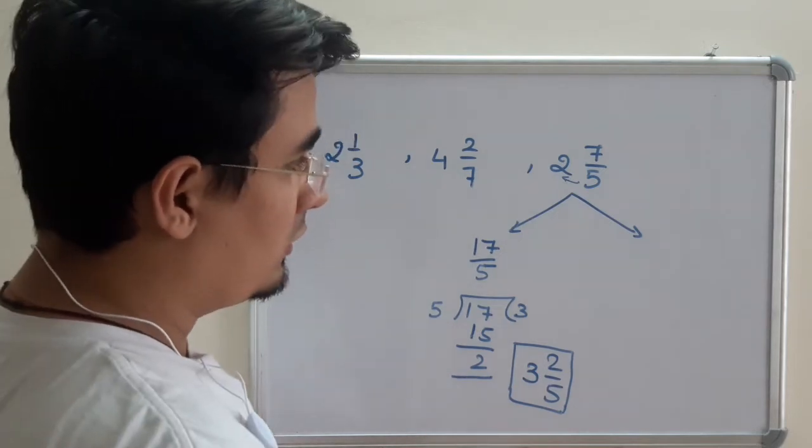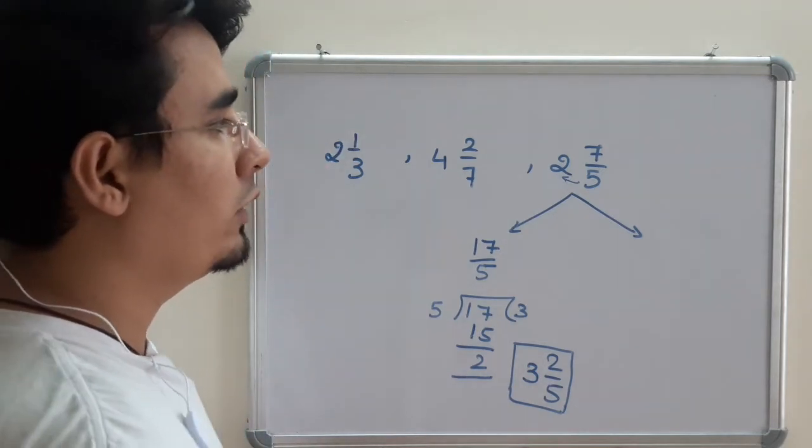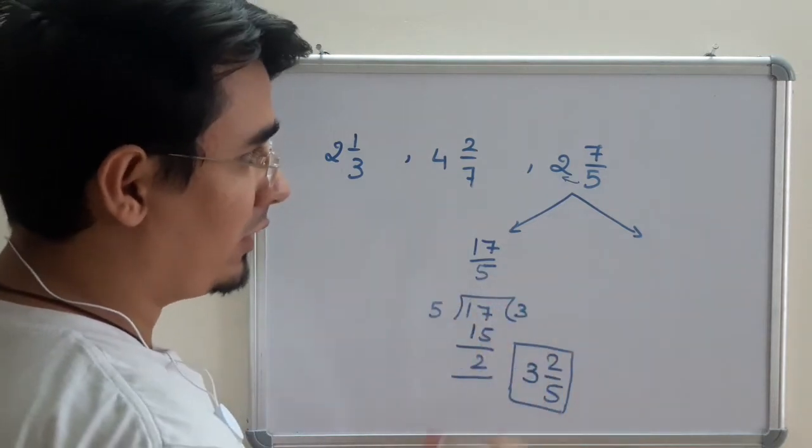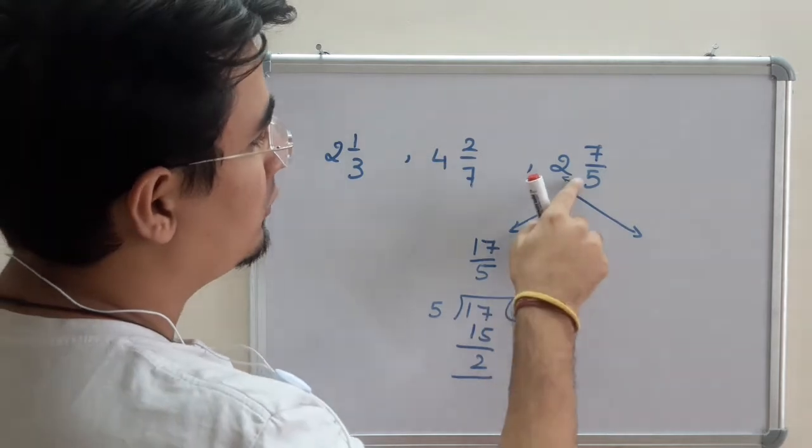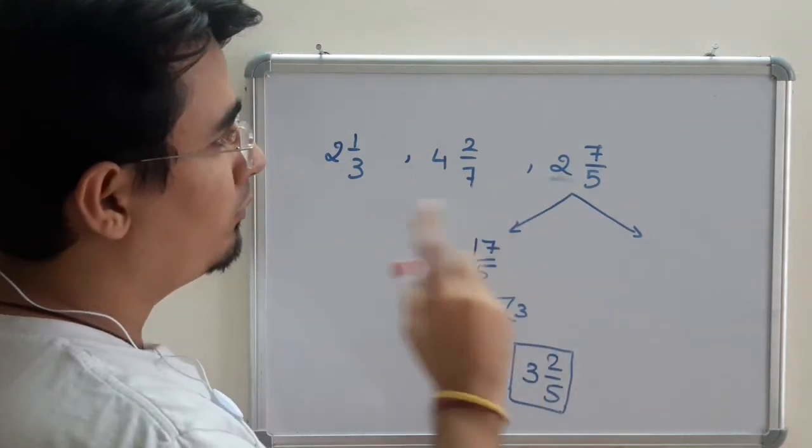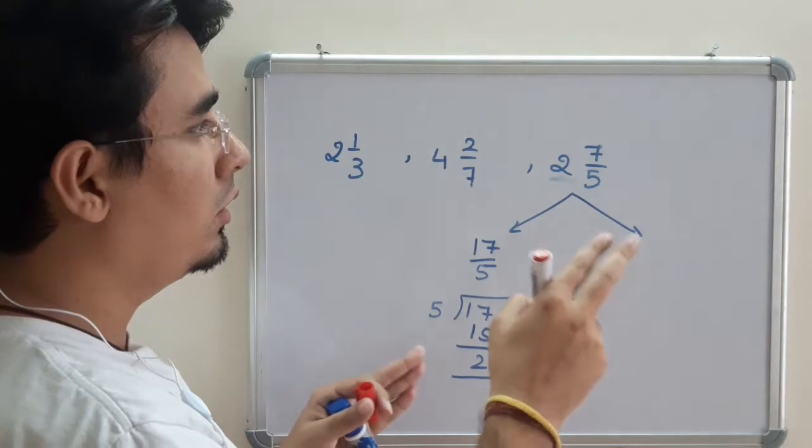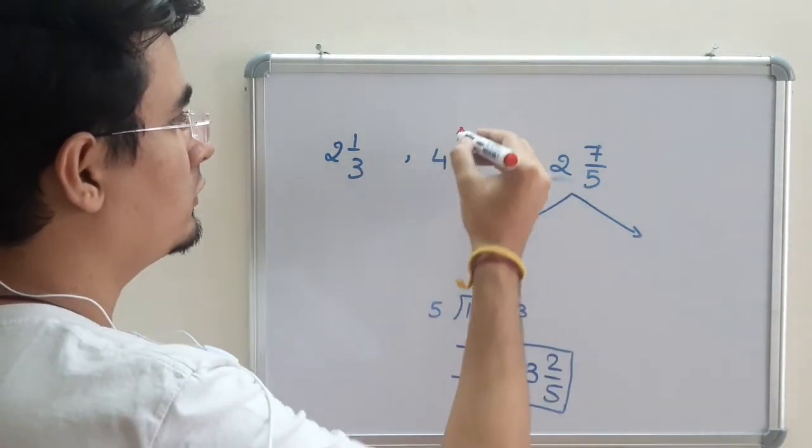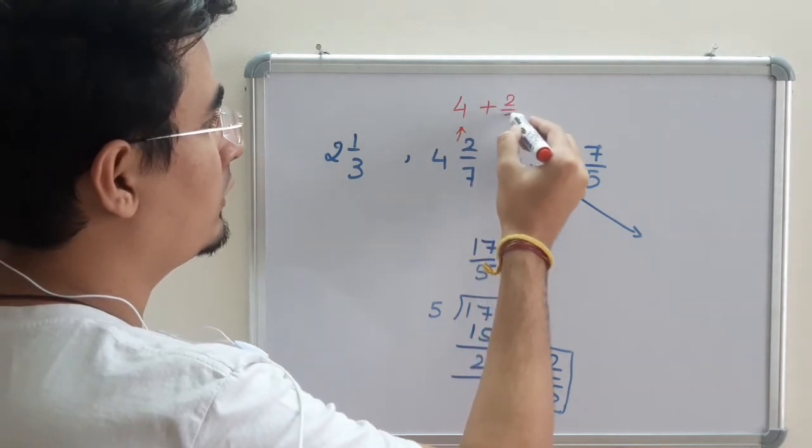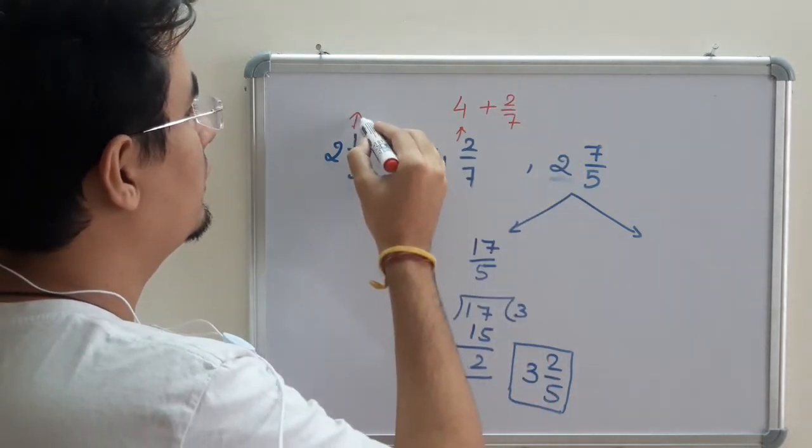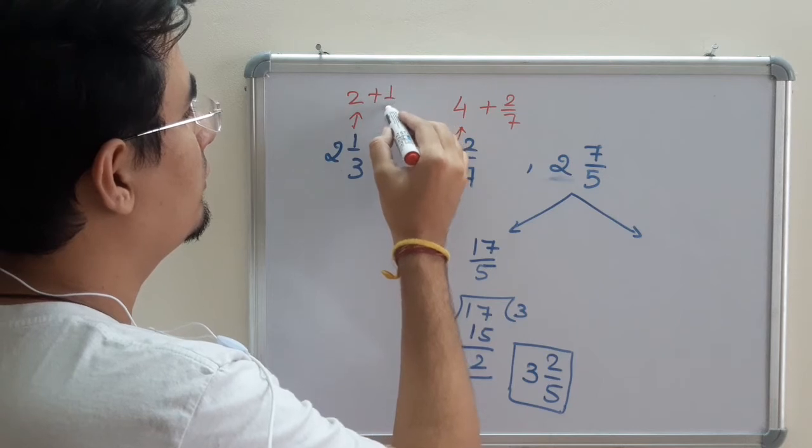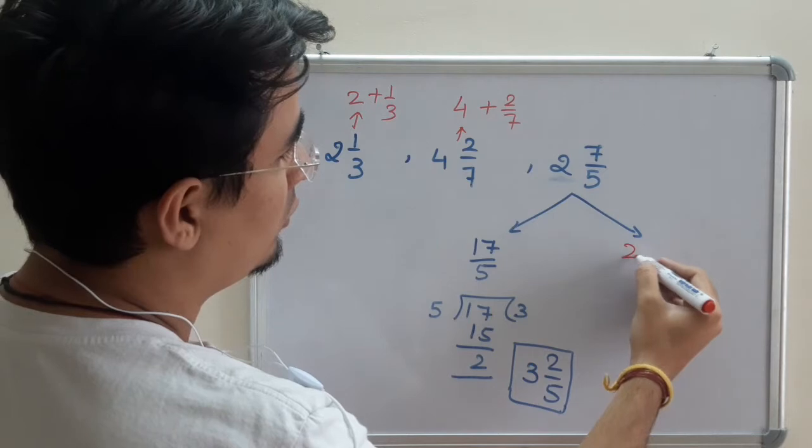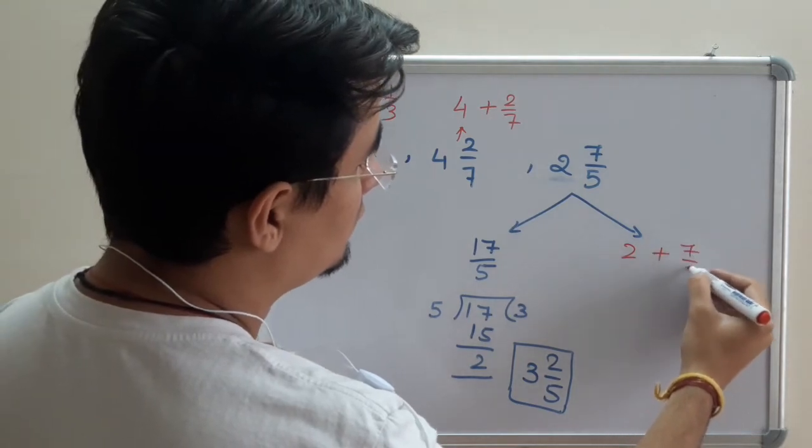I'm going to show another method which will be helpful in doing calculations very easily. As we already know, mixed fraction is whole and a proper. So this is whole 2 plus 7/5. Write it this way or think it this way.